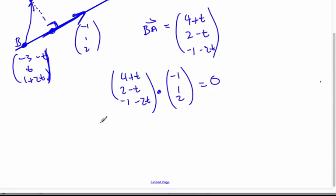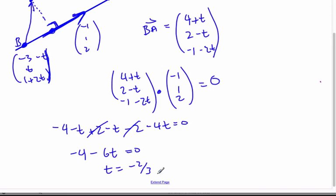And so when I dot product, I get negative 4 minus t, plus 2 minus t, minus 2 minus 4t is equal to 0. And so now those cancel away, and so I get negative 4 minus 6t is 0. And so t is equal to negative 2 thirds.